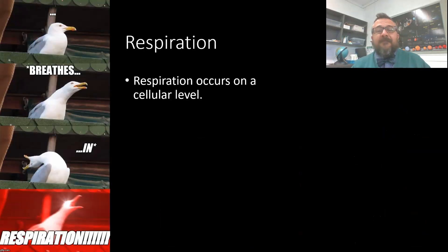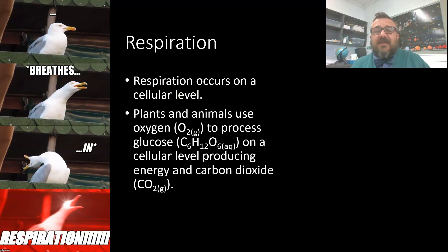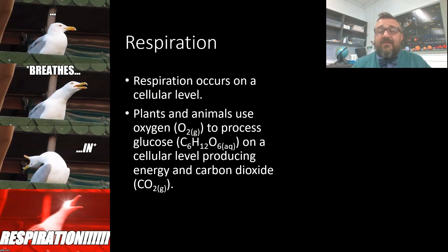Respiration occurs on a cellular level for all living things. This means they take oxygen in, use it to convert food into energy, and then breathe out carbon dioxide. Plants and animals use oxygen (O2) to process glucose (C6H12O6) on a cellular level, producing energy and carbon dioxide.